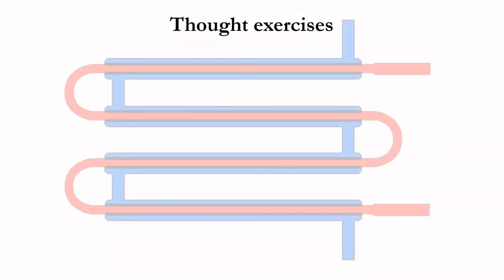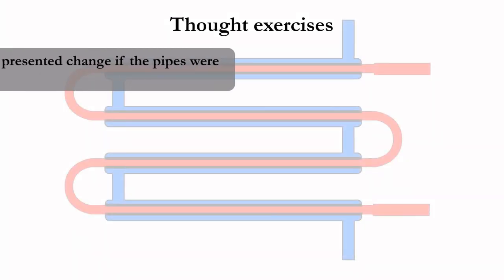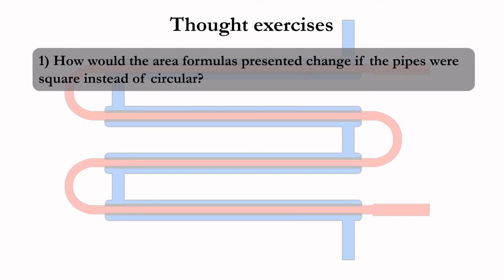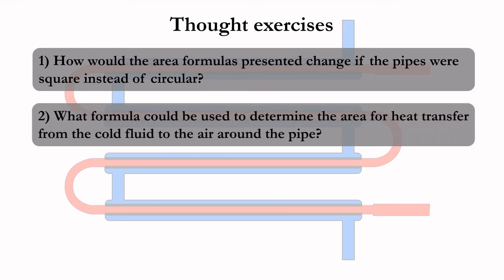Here are some thought exercises for you to consider. How would the area formulas presented here change if the pipes were square instead of circular? What formula could be used to determine the area for heat transfer from the cold fluid to the air around the pipe?